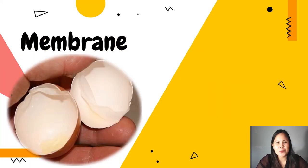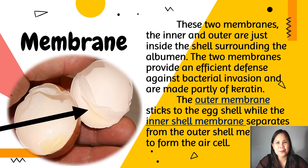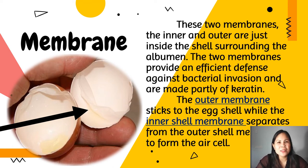Egg has two membranes — the inner and outer — just inside the shell surrounding the albumin. These two membranes provide an efficient defense against bacterial invasion and are made partly of keratin. The outer membrane sticks to the eggshell while the inner shell membrane separates from the outer shell membrane to form the air cell. The inner and outer membranes found between the egg shell and the egg white keep bacteria from entering the egg and help slow evaporation of moisture.